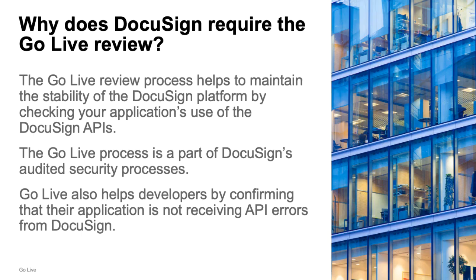The GoLive process helps to maintain the stability of the DocuSign platform by checking your application's use of the DocuSign APIs. The GoLive process is part of DocuSign's audited security processes. GoLive also helps DocuSign customers, developers, and ISVs — independent software vendors — by confirming that their application is not receiving API errors from DocuSign.